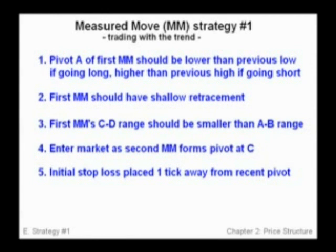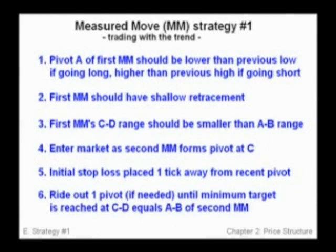Number five: the initial stop loss is placed one tick away from the recent pivot. Number six: ride out one pivot if needed until the minimum target is reached at CD equals AB of the second measure move.